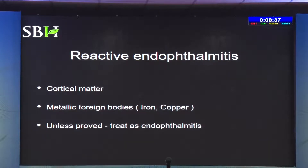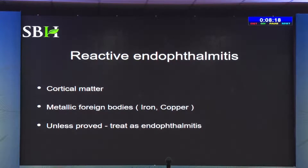Reactive endophthalmitis is another important entity. Ferromagnetic materials — iron, copper, and nickel — cause reactive endophthalmitis. Especially pure copper and pure iron can cause a lot of reaction. This reactive endophthalmitis can be due to ferromagnetic foreign bodies or due to cortical lens matter. However, unless proven otherwise, you should treat all these cases as infectious endophthalmitis.